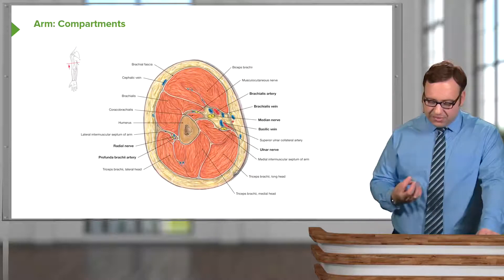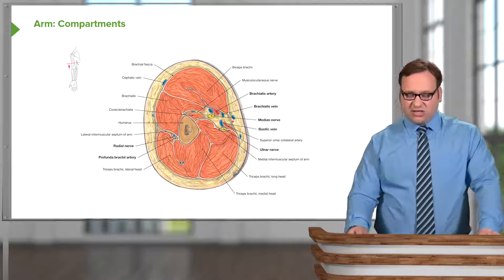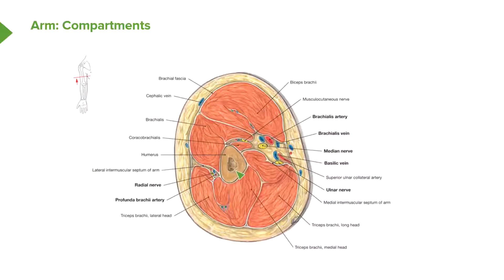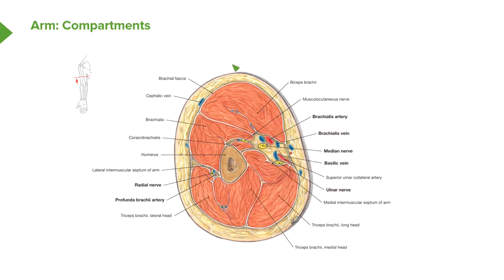Looking at the compartments of the arm, this is a section through the arm. We can see the humerus, and then lying anteriorly we have the subcutaneous tissue and superficial fascia, and then there is a line running around the muscles — that is the brachial fascia. When looking at cross-sections, it's important to realise, as this diagram indicates, that we're looking at it from below. So this is the medial aspect, this is the lateral aspect, this is the posterior aspect, and this is the anterior aspect.